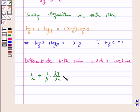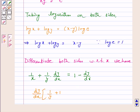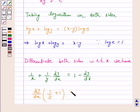Combining the terms containing dy/dx, we have (dy/dx)(1/y + 1) equals 1 minus 1/x.